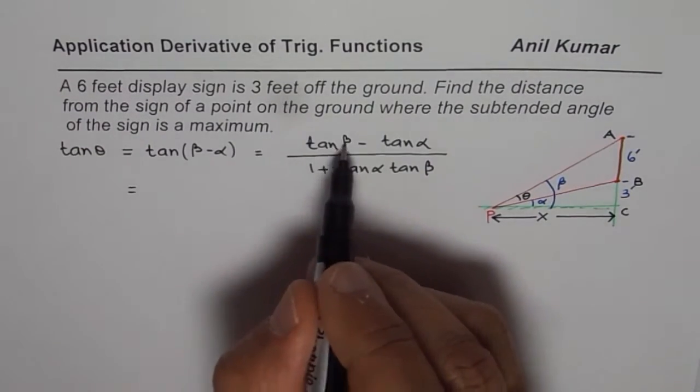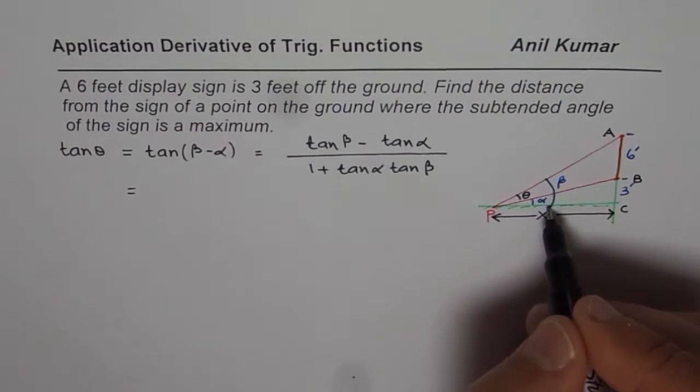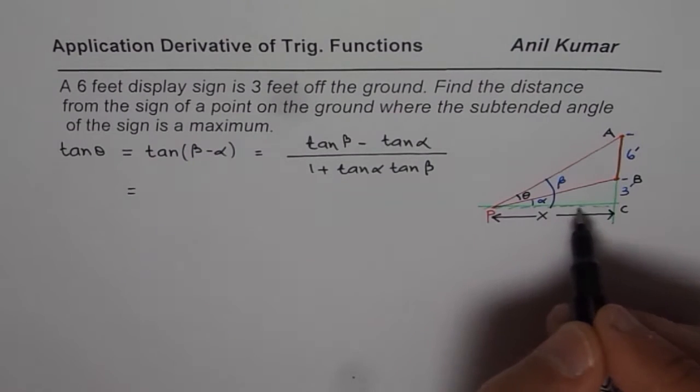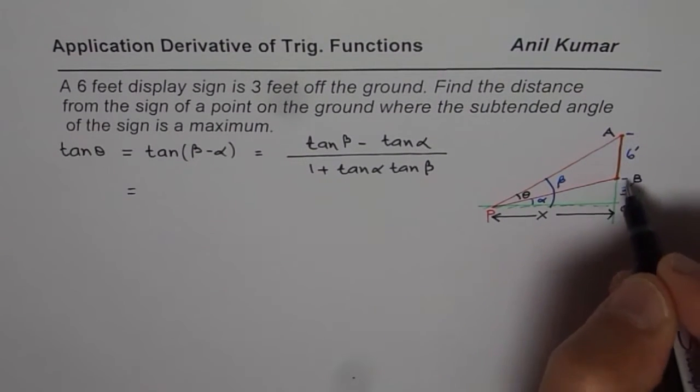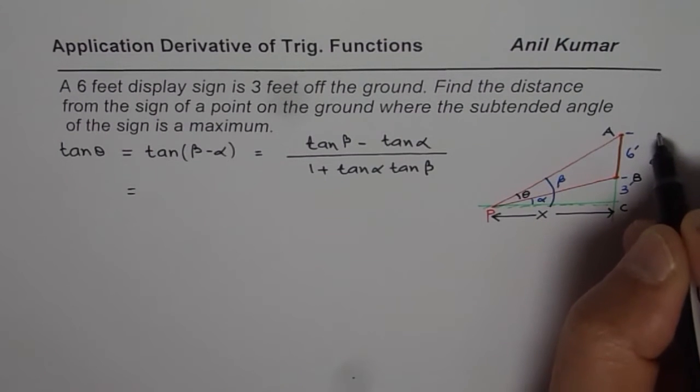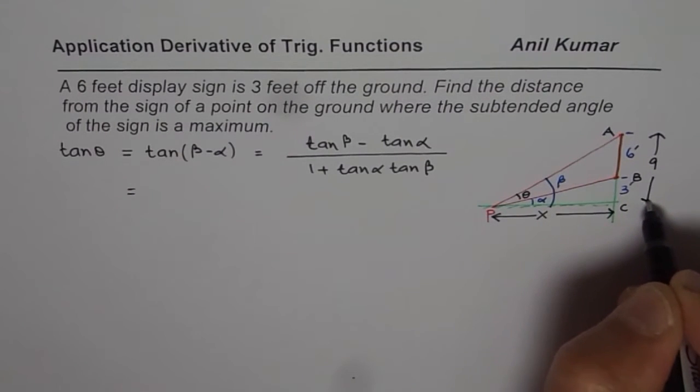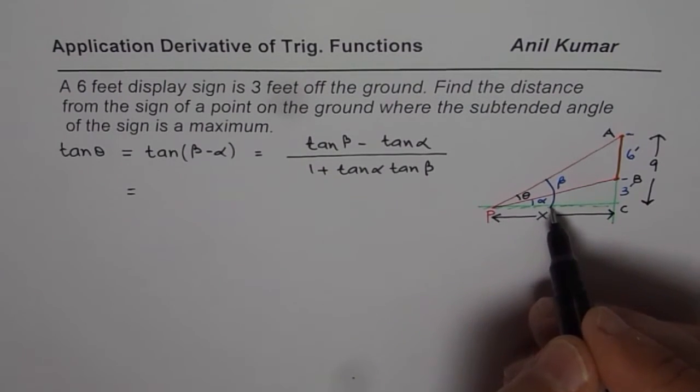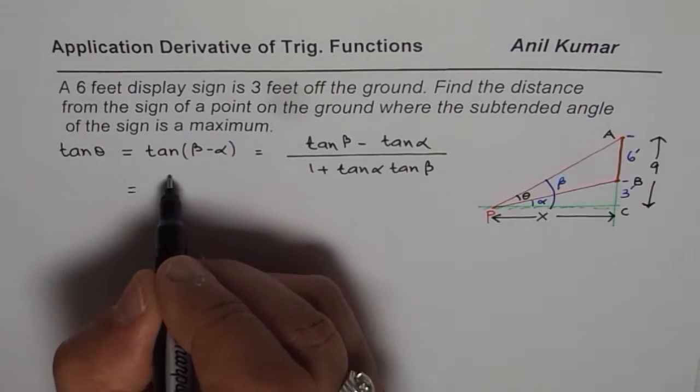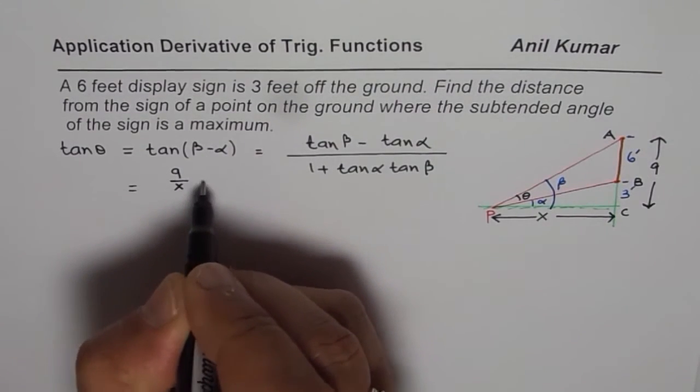Now, in this case, what is tan beta? Tan beta is this big triangle, if you see, is that side AC, which is 6 plus 3, 9, right? So this side is 9 for us. So tan, you know, is opposite over adjacent side. So tan beta is 9 over X. So instead of tan beta, I will write 9 over X minus.